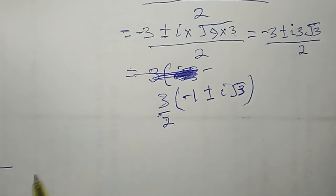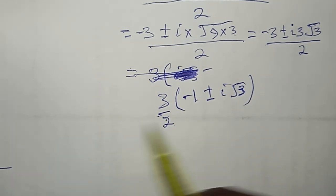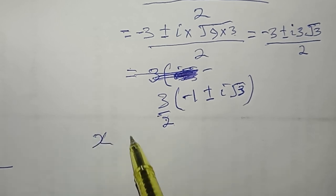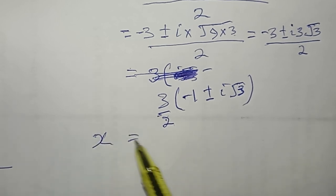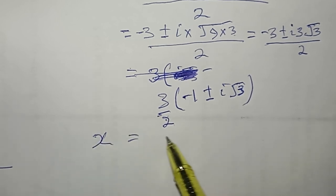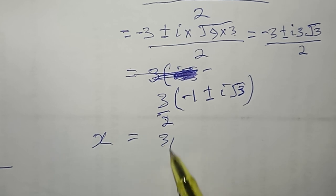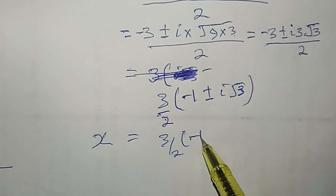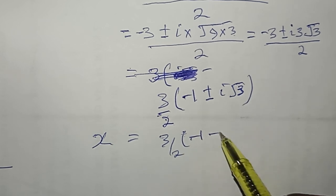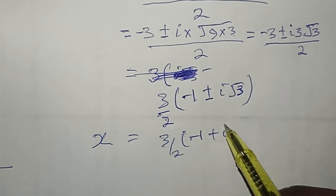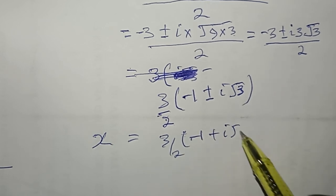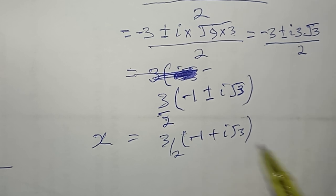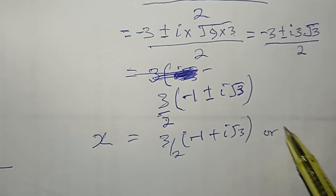Splitting this, we can see that x equals (3/2)(−1 + i√3) or x equals (3/2)(−1 − i√3).